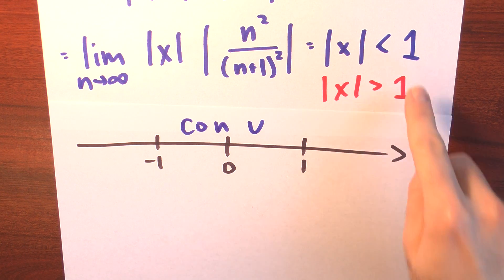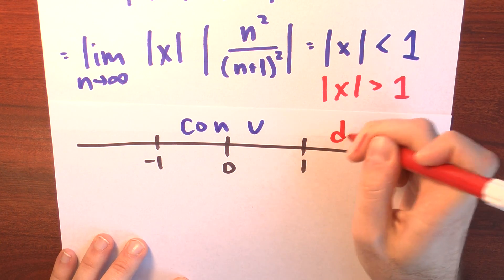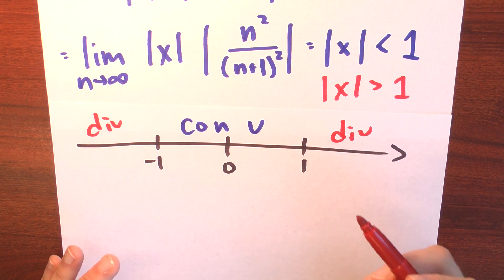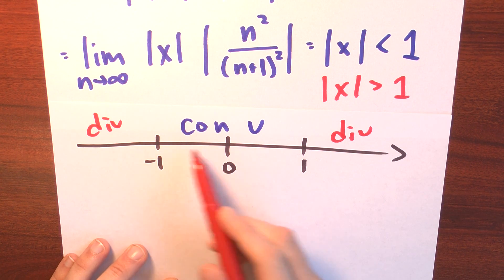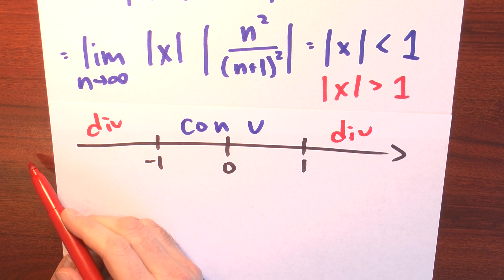I also know that when the absolute value of x is bigger than 1, then the series diverges. That tells me the series diverges when x is bigger than 1 and the series diverges when x is less than minus 1. So, it converges in between here, diverges to the right of this, and diverges to the left of this.